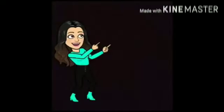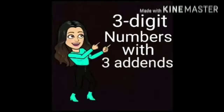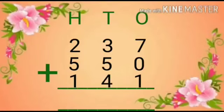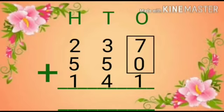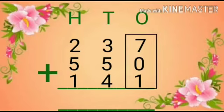Now students, let's add three-digit numbers with three addends. Here in this example, 7, 0, and 1 are at one's place. We have to add them. Seven plus zero equals seven, and seven plus one equals eight.